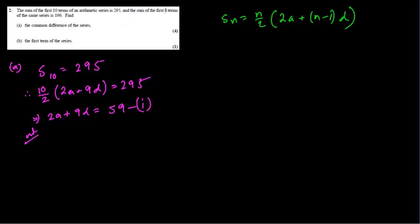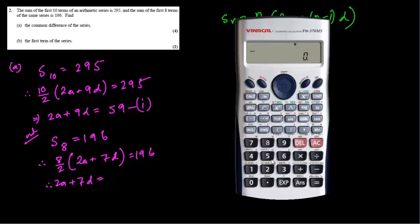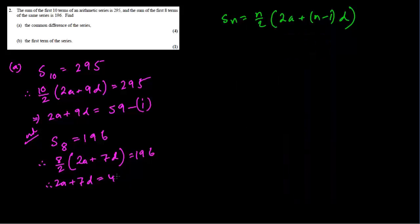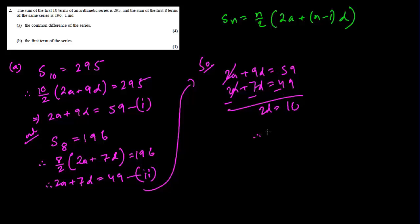Now the second equation: the sum of the first 8 terms is 196, so S8 = 196. Therefore 8/2 × (2a + 7d) = 196, giving 2a + 7d = 49. This is equation 2. Now using the method of elimination: subtracting equation 2 from equation 1, we get 9d − 7d = 59 − 49, so 2d = 10, therefore the common difference d = 5.